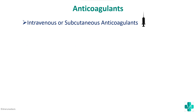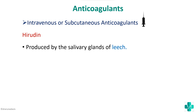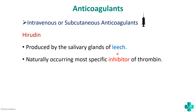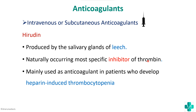The next important intravenous anticoagulant is hirudin. Hirudin is a natural anticoagulant produced by the salivary glands of leeches, especially the medicinal leech. Its mechanism of action is that it is a specific inhibitor of thrombin, inhibiting thrombin to prevent coagulation. Hirudin is mainly used in patients who are on heparin when they develop heparin-induced thrombocytopenia.